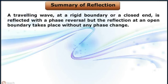A travelling wave at a rigid boundary or a closed end is reflected with a phase reversal, but the reflection at an open boundary takes place without any phase change.